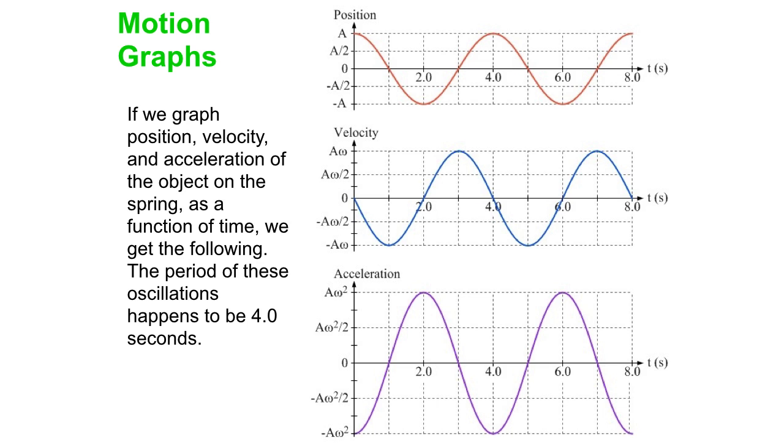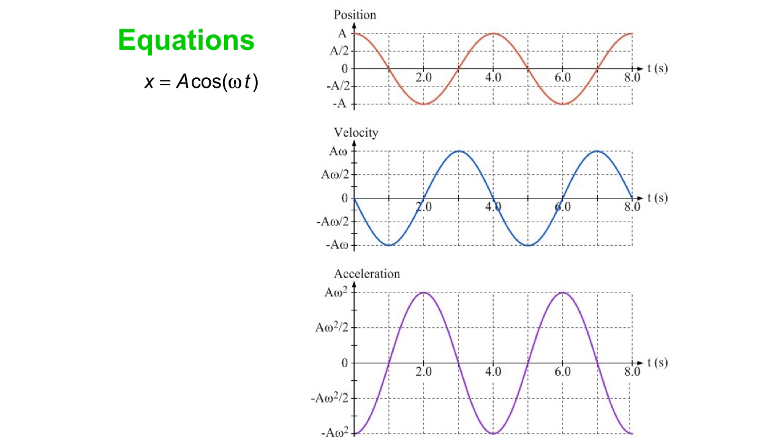So that's the motion. You can see that we can fit these with sines and cosines. Our equation for position as a function of time is A cos(ωt), omega being what we call the angular frequency. That works as long as at t equals zero, the object is at x equals positive A, the maximum displacement point.